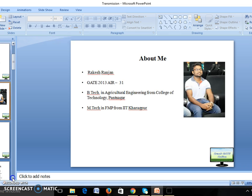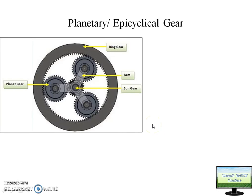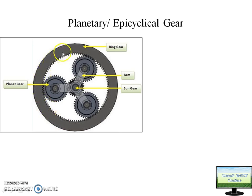Let's go to the slide. Planetary gear is also called epicyclic gear. In a planetary gear system there are mainly four parts. The first is the ring gear — this outer, biggest gear of the system is called the ring gear.